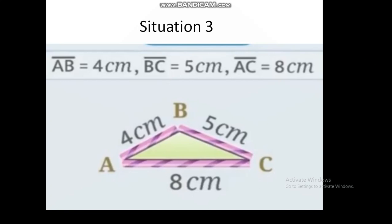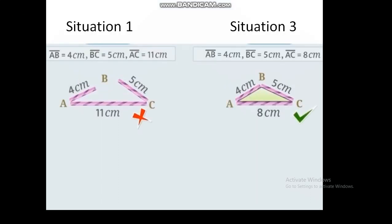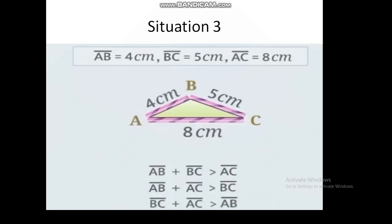In situation 3, if we take an 8 cm straw in place of 9 cm or 11 cm, then the construction of a triangle is possible because the sum of any two sides of the triangle is greater than the length of the third side. That is, AB plus BC is greater than AC — meaning 4 cm plus 5 cm is greater than 8 cm. Situation 3 also confirms that AB plus BC is greater than AC, and AB plus AC is greater than BC.